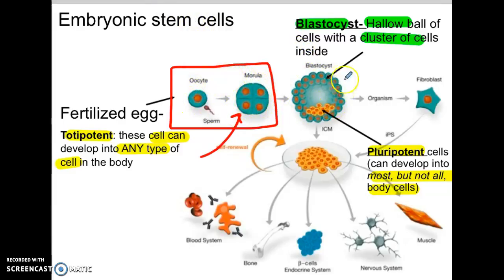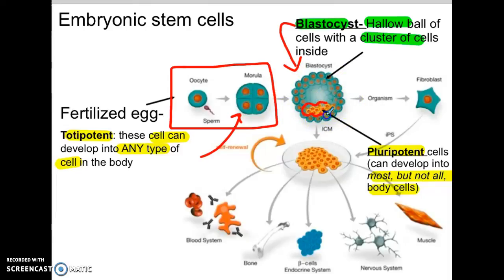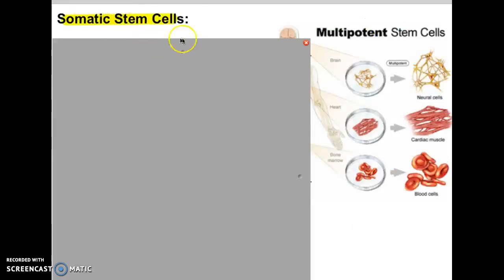The fertilized cell turns into a hollow ball of cells called a blastocyst. Inside the blastocyst is a cluster of cells we now call pluripotent. Pluripotent means that most of these cells can develop into the different types of body cells we have — blood cells, bone cells, nerve cells, muscle cells. This blastocyst is where embryonic stem cells are found.